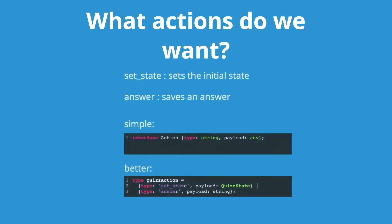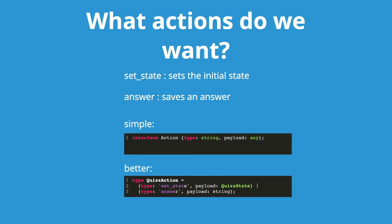Now, what are the actions we want to manage? There are two. First, set state — which resets the state with an initial state. The second is answer — which stores the answer. How are we going to type these actions? There's a simple way, which is the naive approach: the action has a type defining the type of the action and a payload which is of any type. But we can do better.